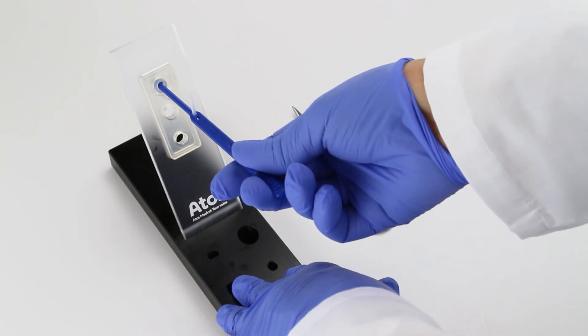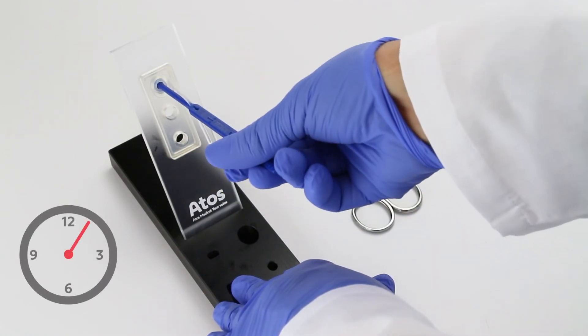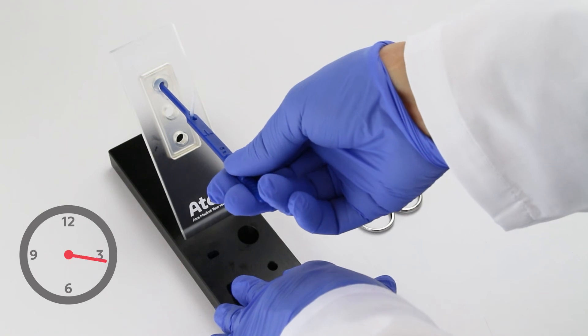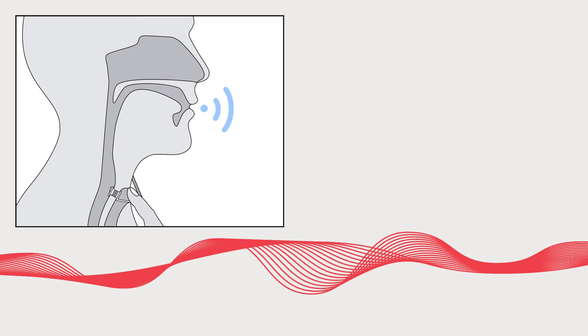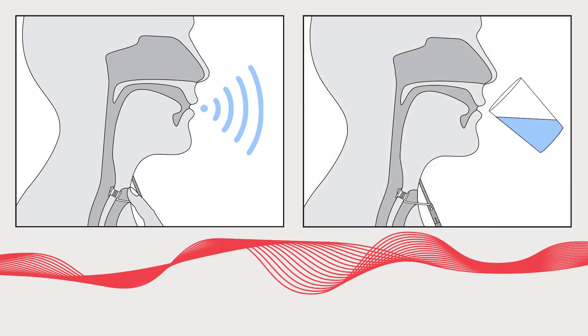Once placement is confirmed, but prior to cutting the safety strap, rotate the voice prosthesis so the safety strap is pointing downwards in the 6 o'clock position. Check the function of the voice prosthesis by asking the patient to speak. Once the patient is speaking fluently, ask them to drink water and observe the prosthesis to ensure no leakage is occurring.